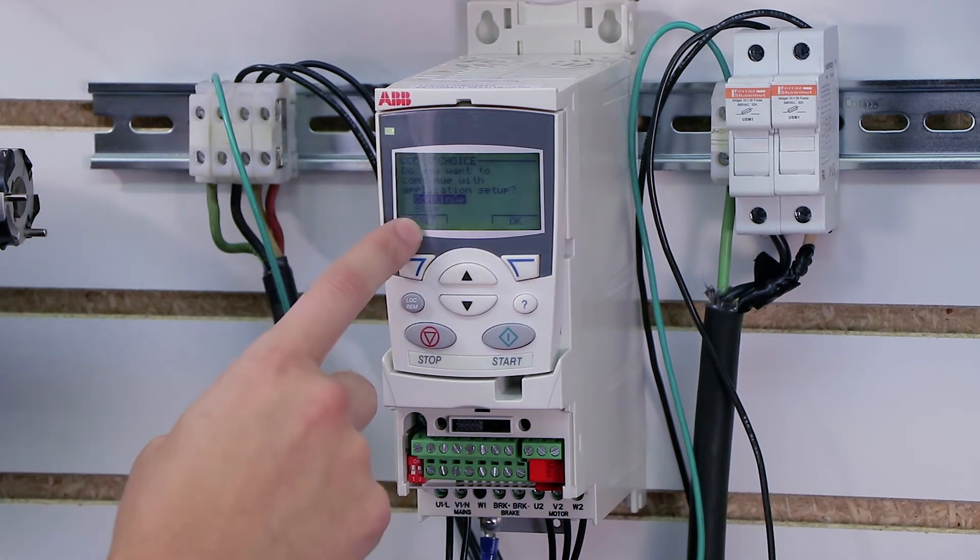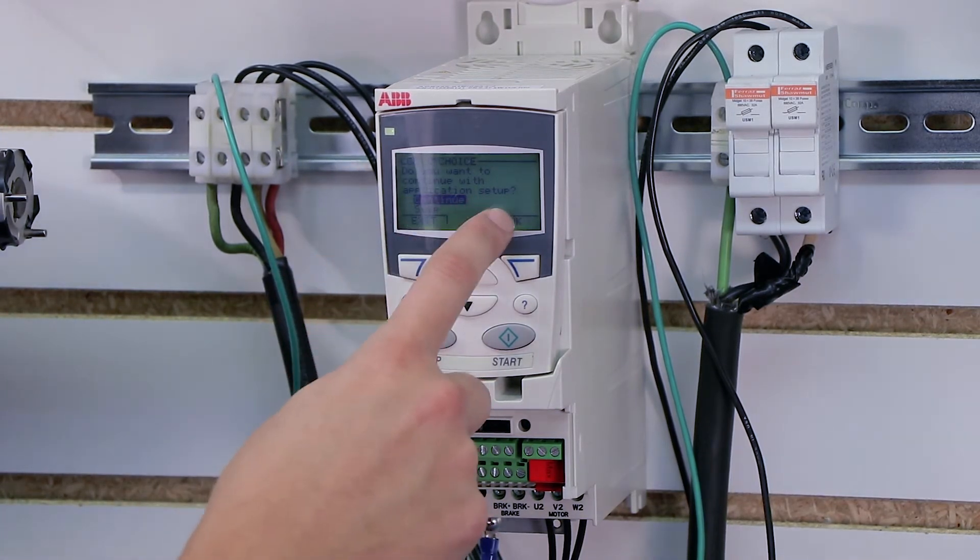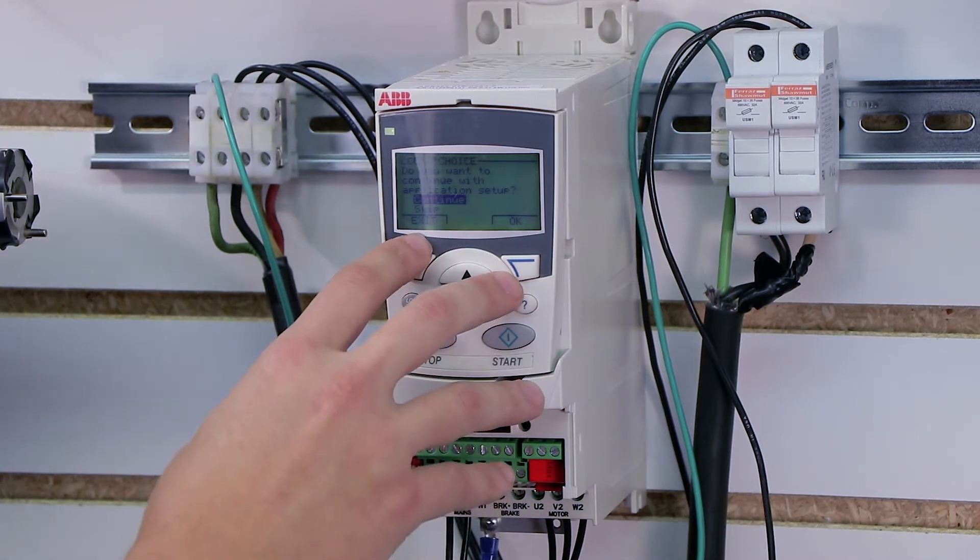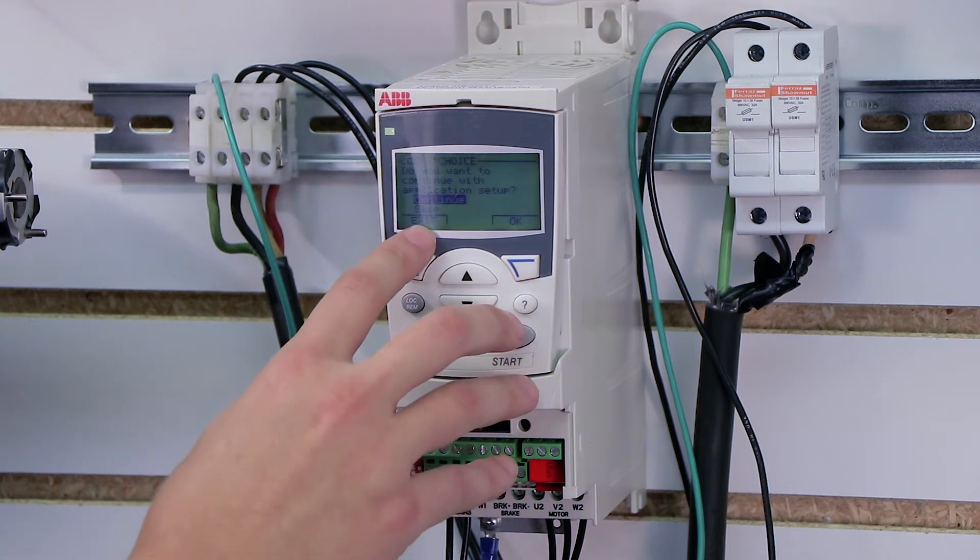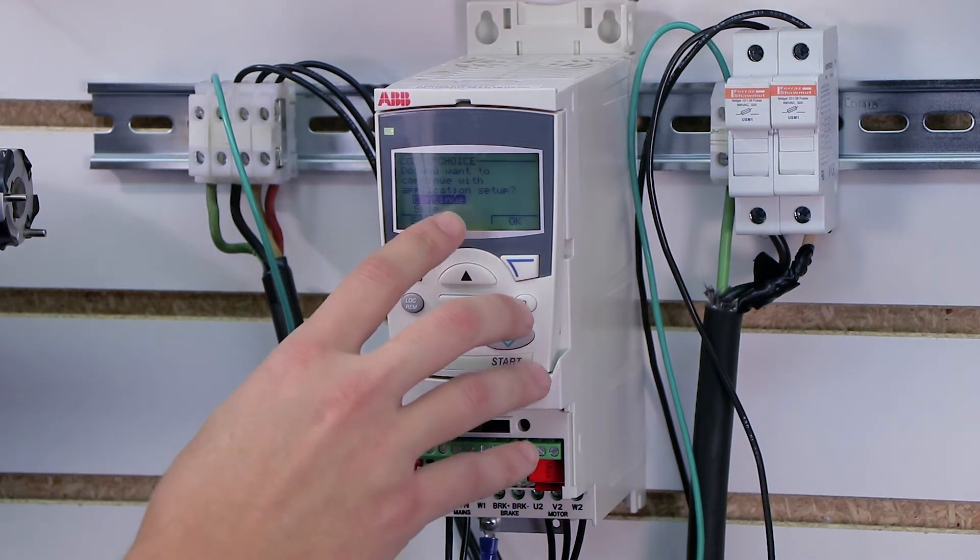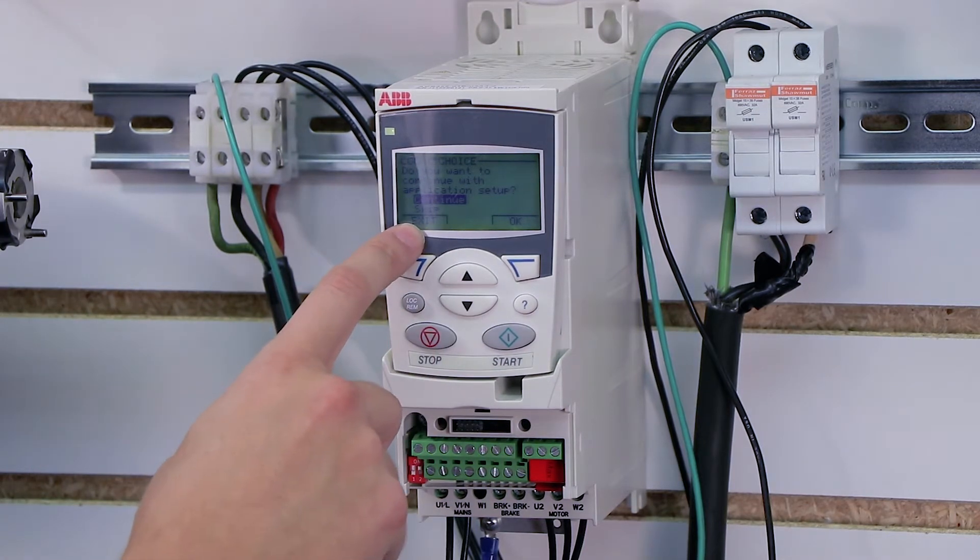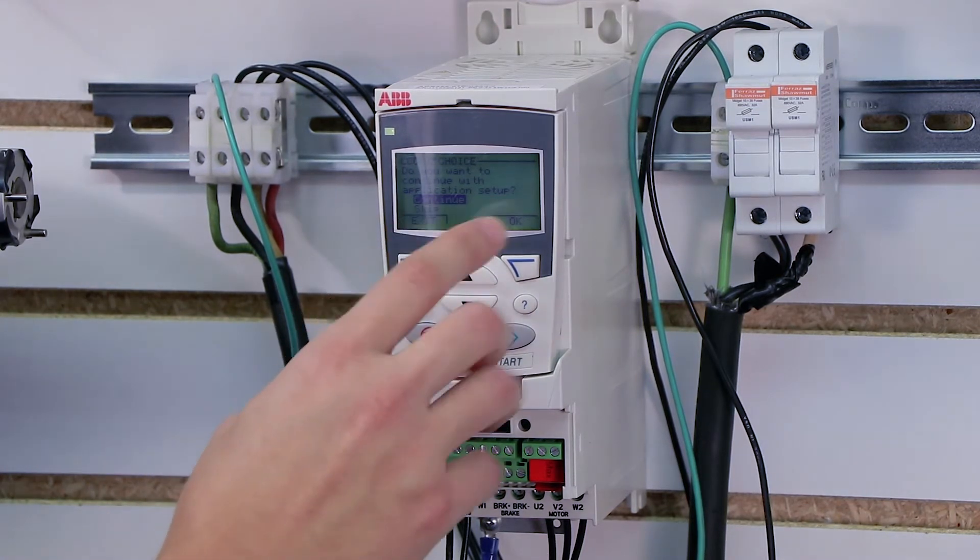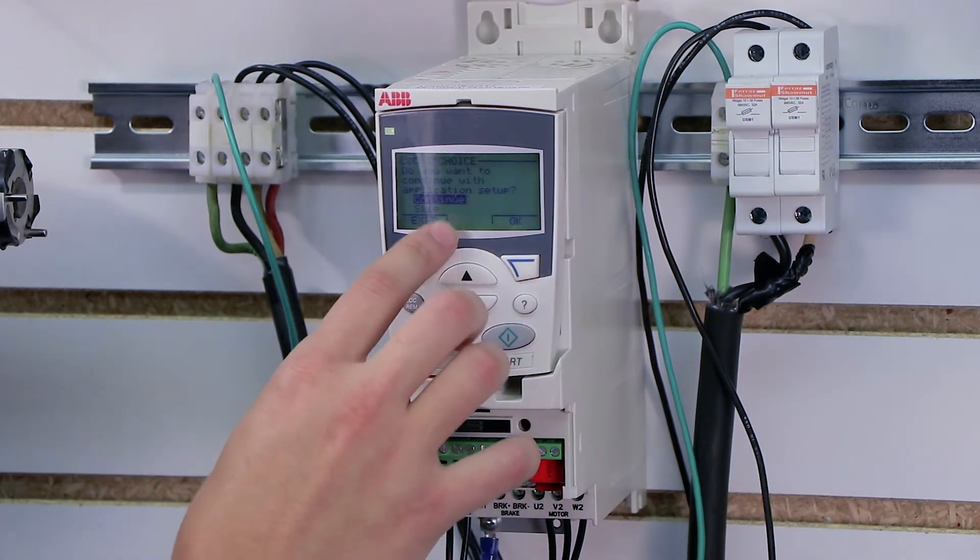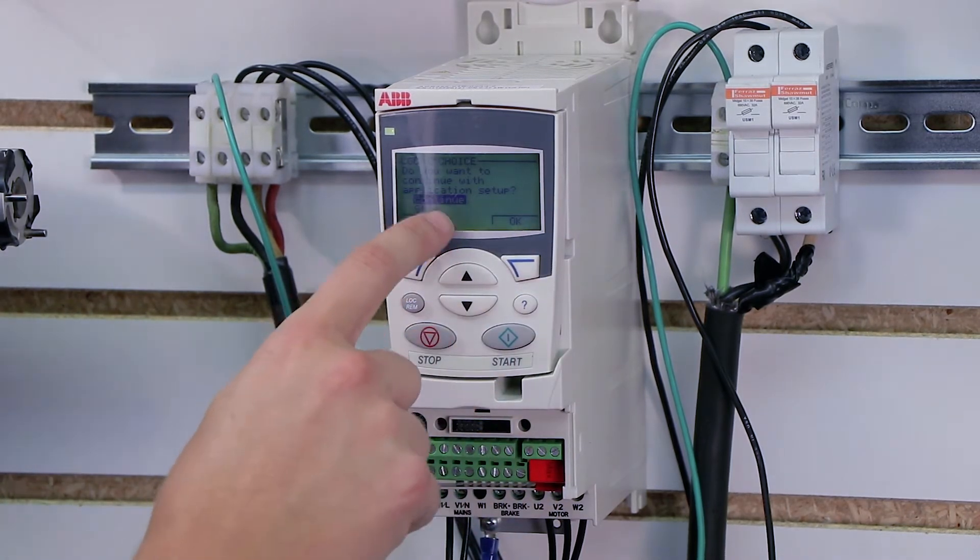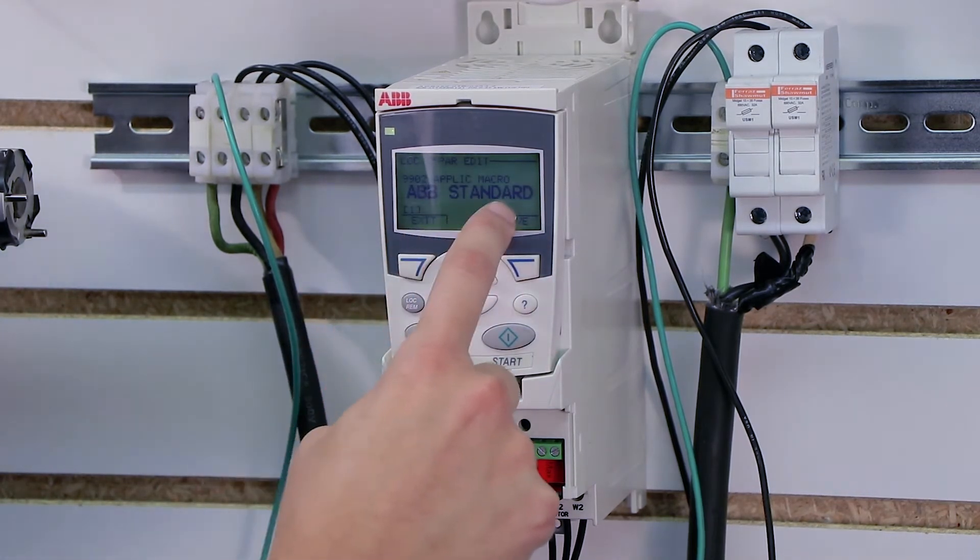So the next question it's going to ask is if we want to continue with application setup. So now that it knows our motor data, it wants to know more information about how I'm going to actually start my motor, stop my motor, it wants to know where I'm going to get my speed from, and that's the purpose of this guide. Now we're not going to do everything in this guide because in this particular video, we're just covering how to start it from the keypad. So we're going to skip over a few of these, but so for the first section here, I'm going to click OK to continue, and I'm going to go with the standard macro.